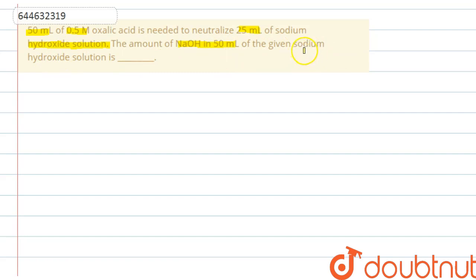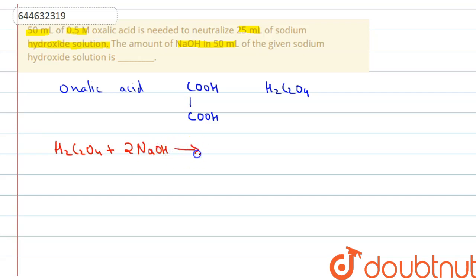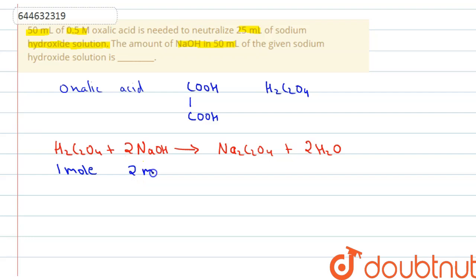First, we have to find out the molarity of the sodium hydroxide solution from this equation. Oxalic acid has the formula H₂C₂O₄. The balanced equation is: H₂C₂O₄ + 2 NaOH → Na₂C₂O₄ + 2 H₂O. As we can see, one mole of H₂C₂O₄ reacts with two moles of sodium hydroxide.